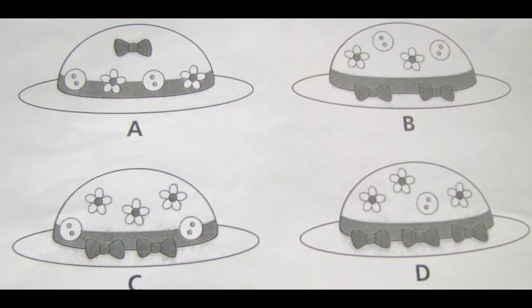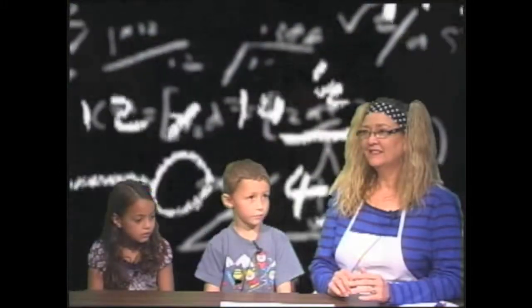All right. Here's your first question. Which of these pictures shows Gemma's hat? It has two buttons, or I think that's a button. It has two bow ties, and it has three flowers. So, which of those pictures shows Gemma's hat?